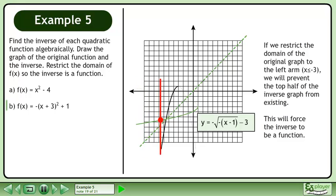If we restrict the domain of the original graph to the left arm, we will prevent the top half of the inverse graph from existing. This will force the inverse to be a function.